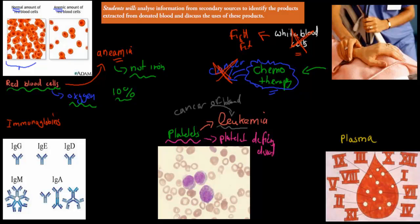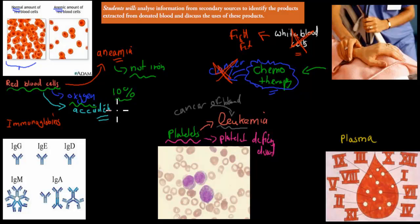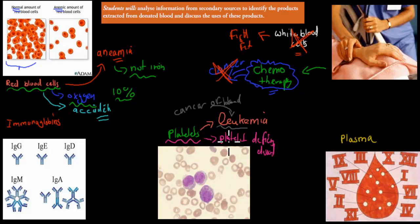Red blood cells are also important for people who have accidents — any rapid blood loss — we give them red blood cells to make sure their normal oxygen-carrying capacity isn't too lowered. So to summarize: red blood cells are for accidents and anemia, platelets are for leukemia patients and platelet deficiency disorders, and white blood cells are for chemotherapy patients.